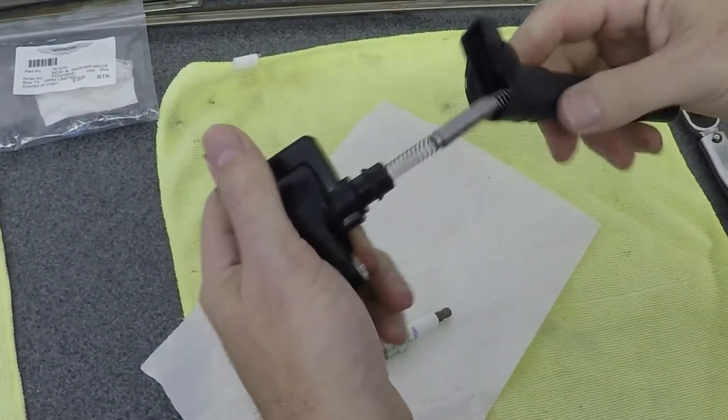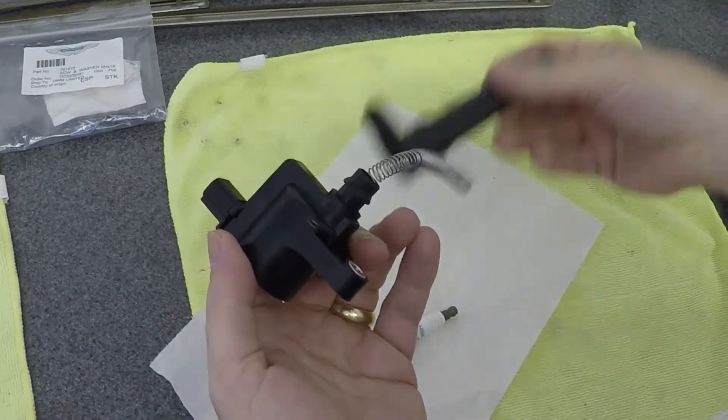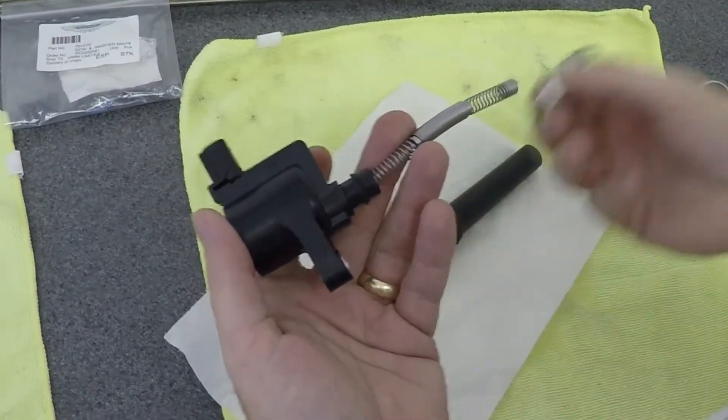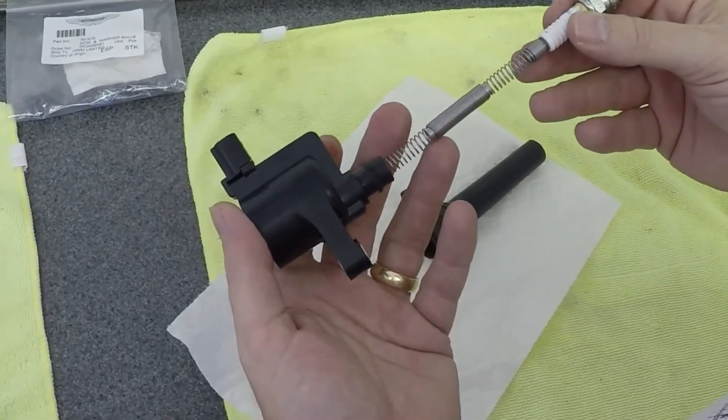All you do to get the rubber bootie off is pull and it comes away. You've got the electrode part that goes to the plug sitting inside here.